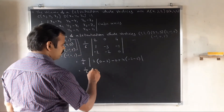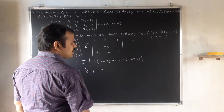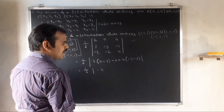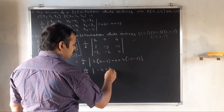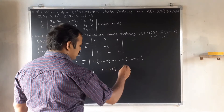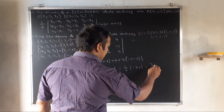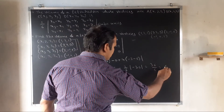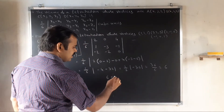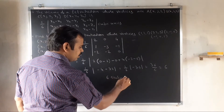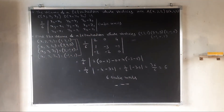Continuing the calculation: (1/6) × [2·(−4) − 2 − (−8·4)] = (1/6) × [−4 − 2 − (−8)] results in (1/6) × 36 = 6. Therefore, the volume of the tetrahedron is 6 cubic units.